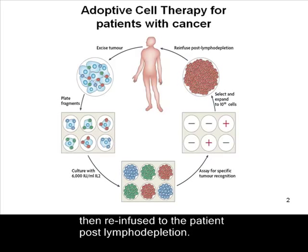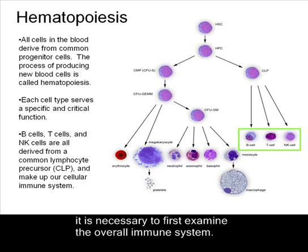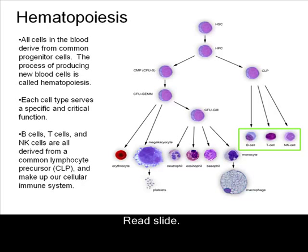To better understand the types of cells that are grown for ACT protocols, it is necessary to first examine the overall immune system. All cells in the blood derive from common progenitor cells. The process of producing new blood cells is called hematopoiesis. Each cell type serves a specific and critical function.